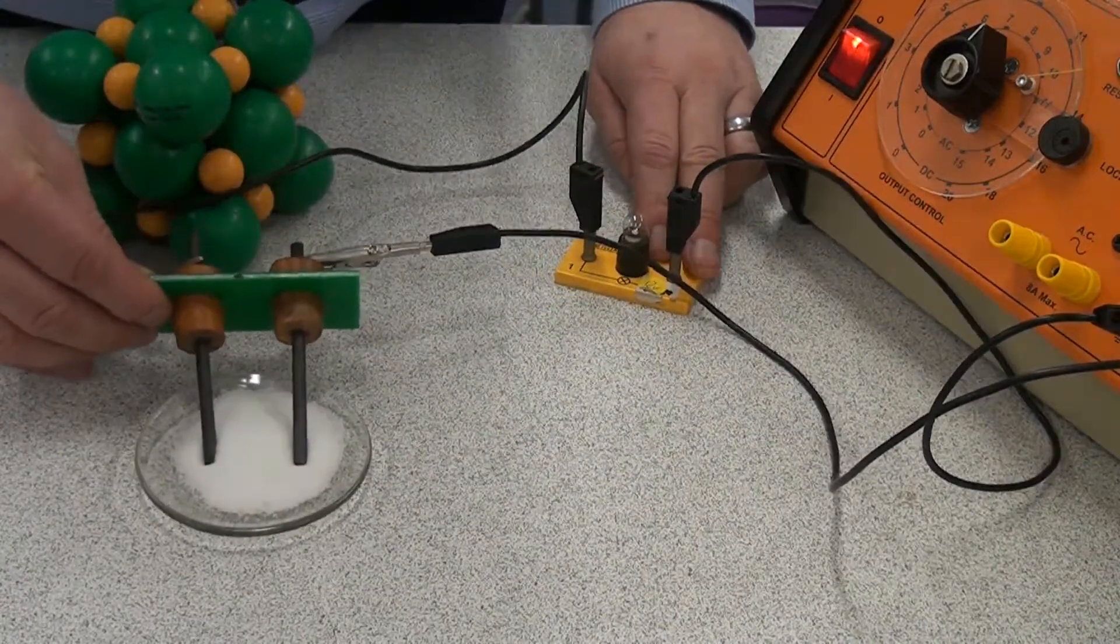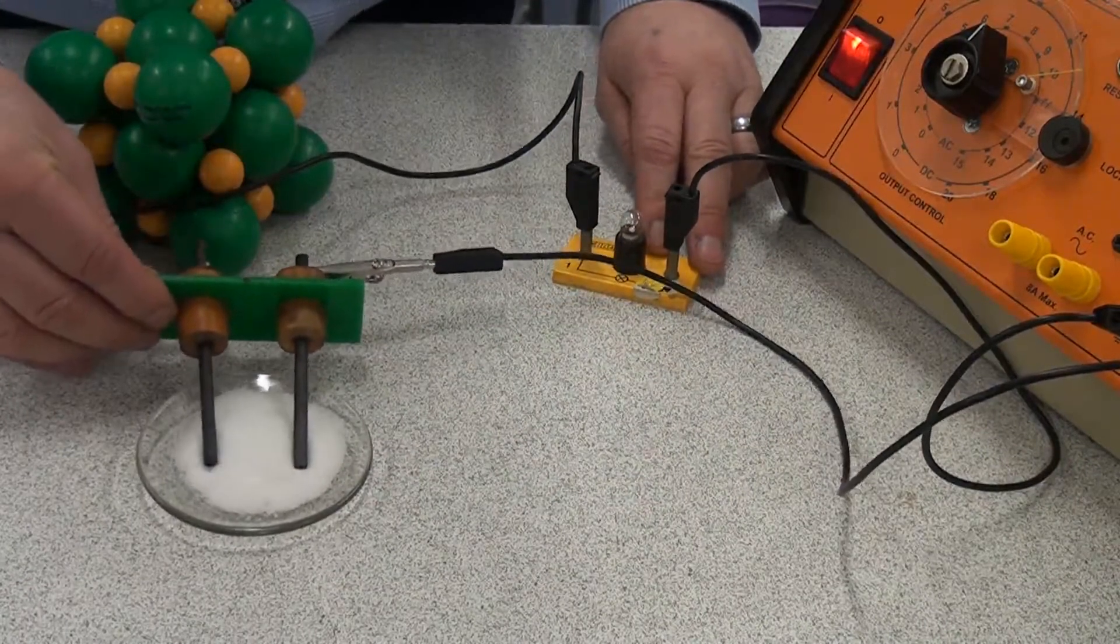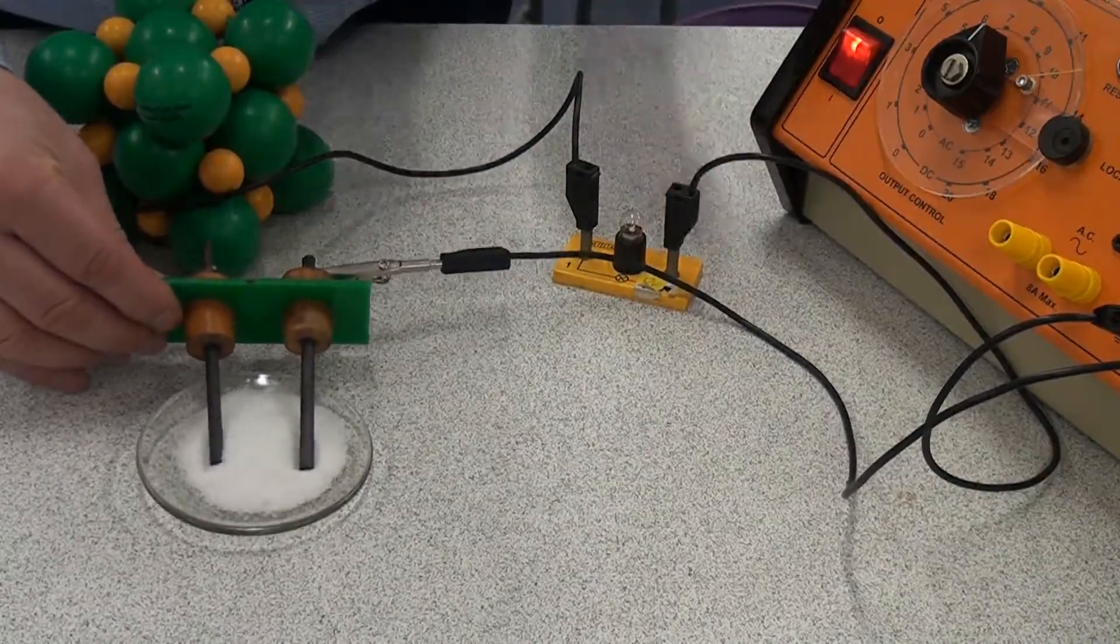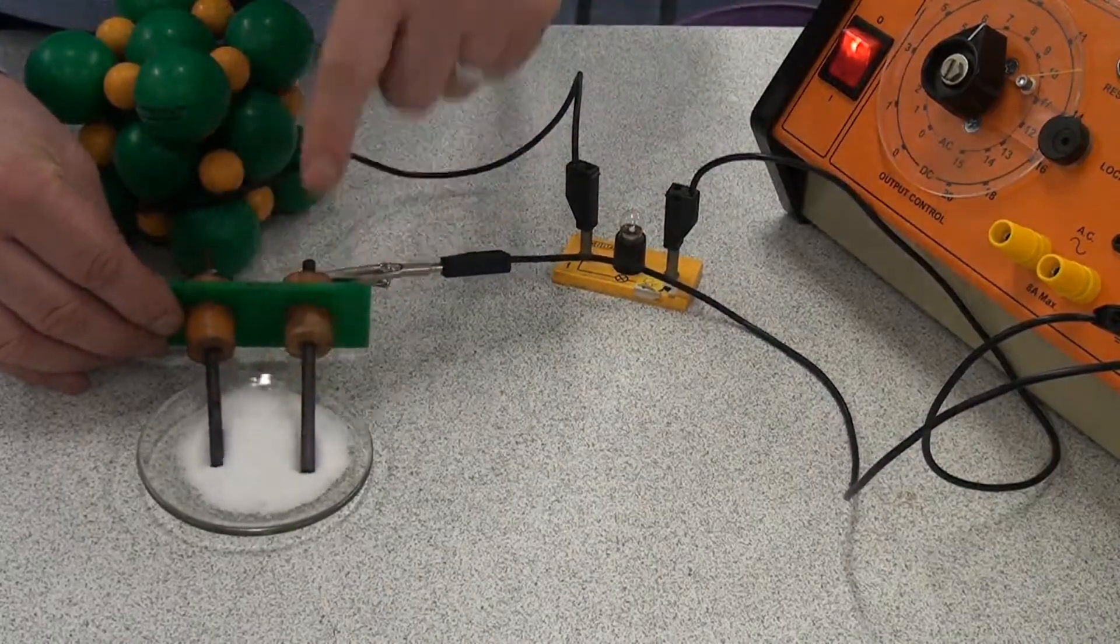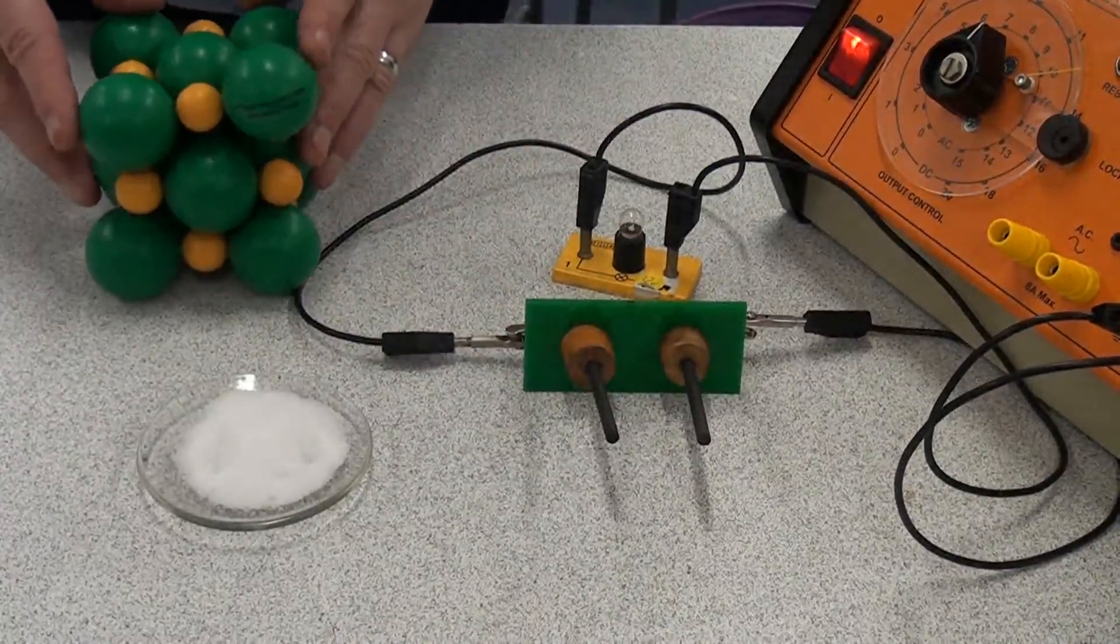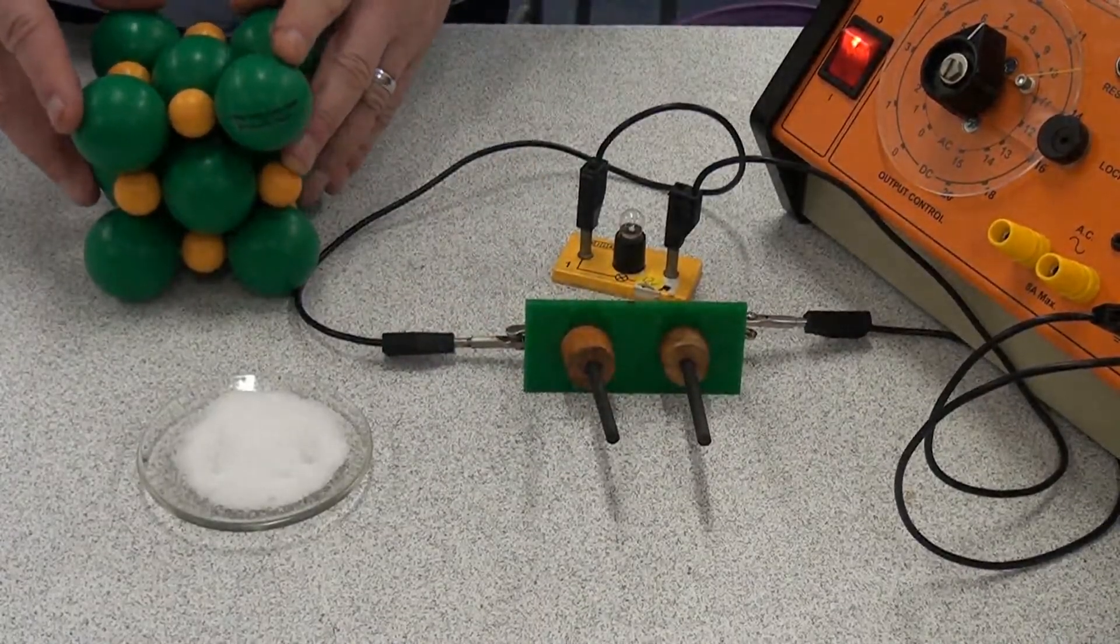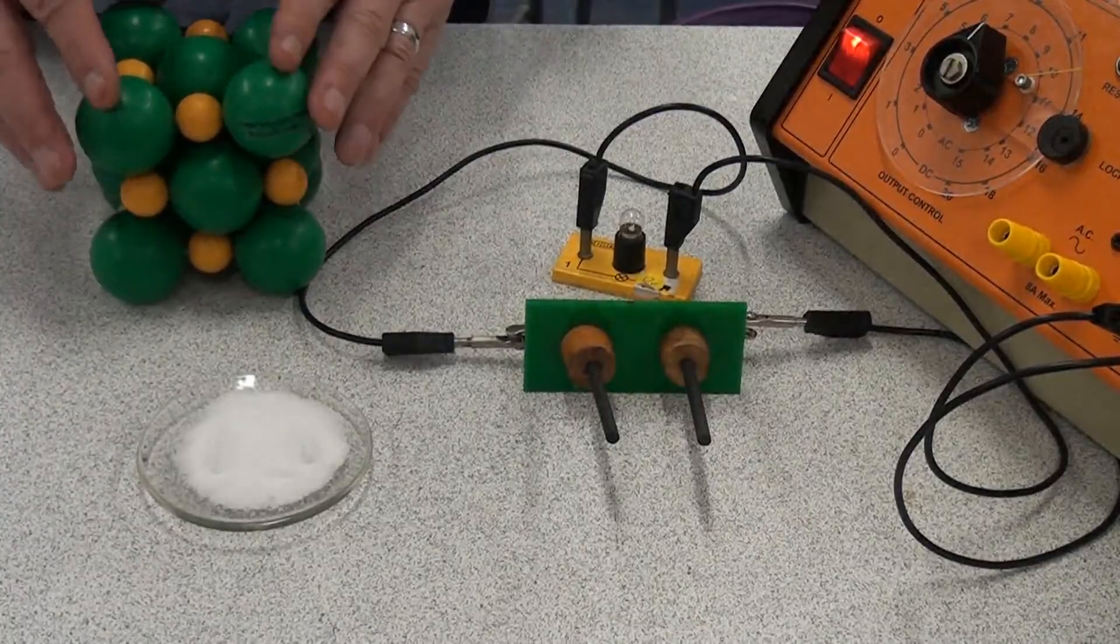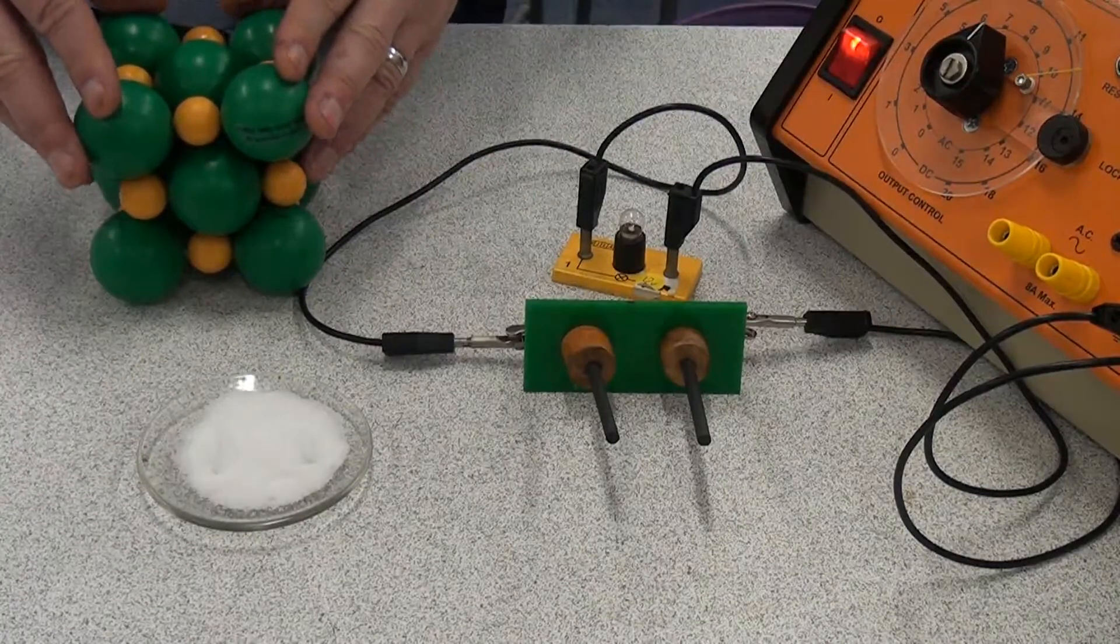Well, as you can see, when it's a solid, the ionic compound can't conduct electricity. Electricity isn't flowing between these two carbon rods. And the reason for that is the ions are held in place by those strong electrostatic forces. So the ions are fixed in position and aren't able to move.